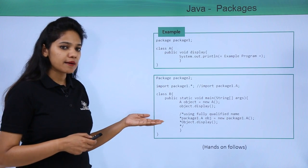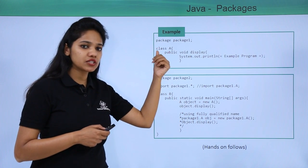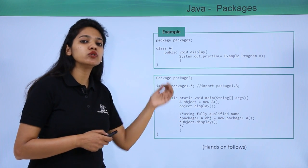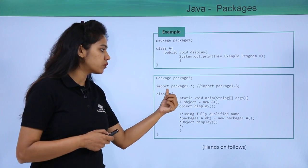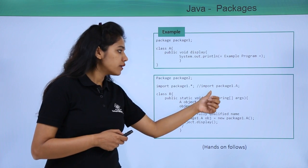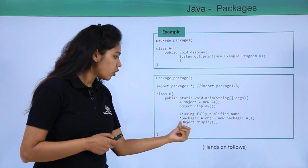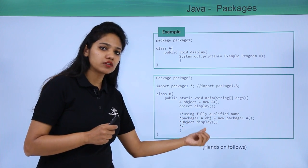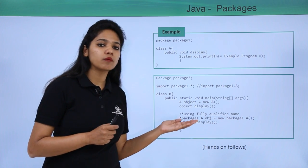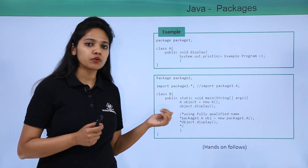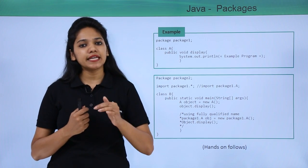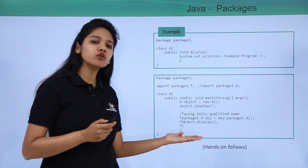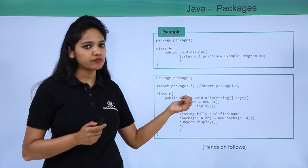Here is an example: a package is created with the 'package' keyword and a package name, containing a class. In the next package, to call package 1 you use the import keyword followed by package 1 and the wildcard symbol, or import package 1 and the specific class file name. For the fully qualified name, you write package1.ClassName and create its object reference. Let us execute this program practically to understand how to create a package and call it from another package.